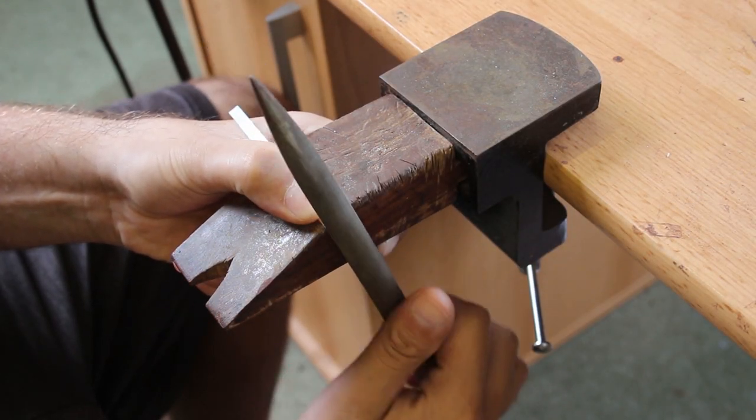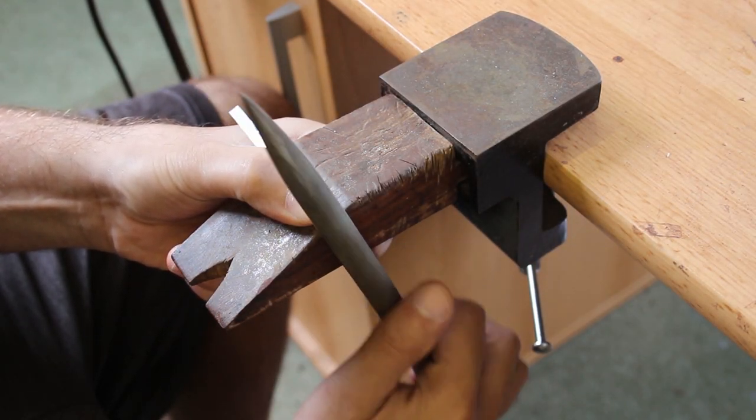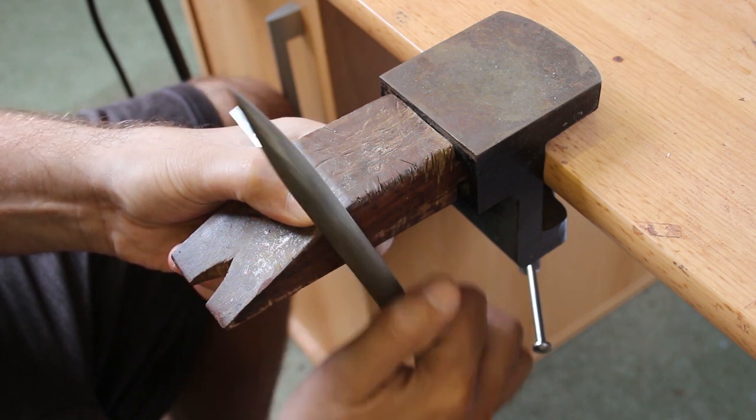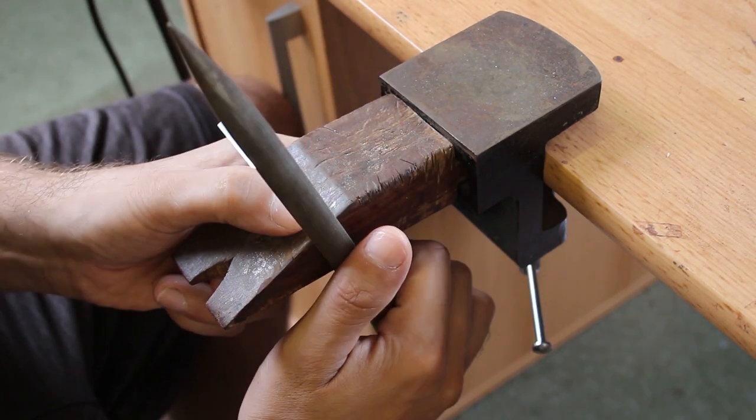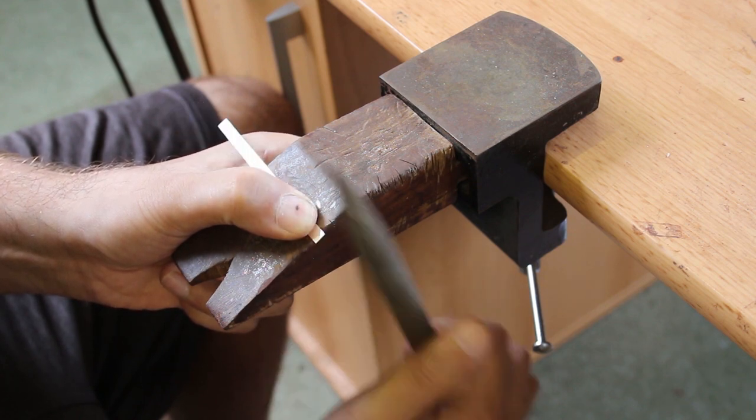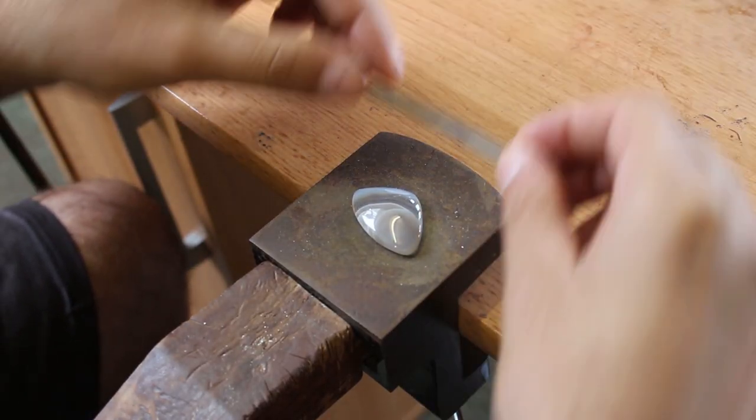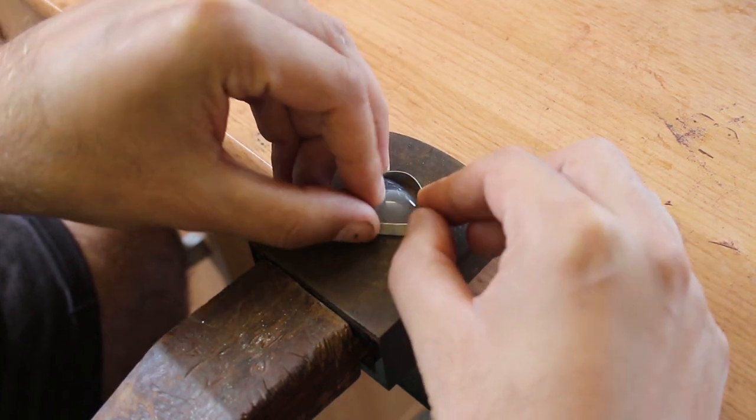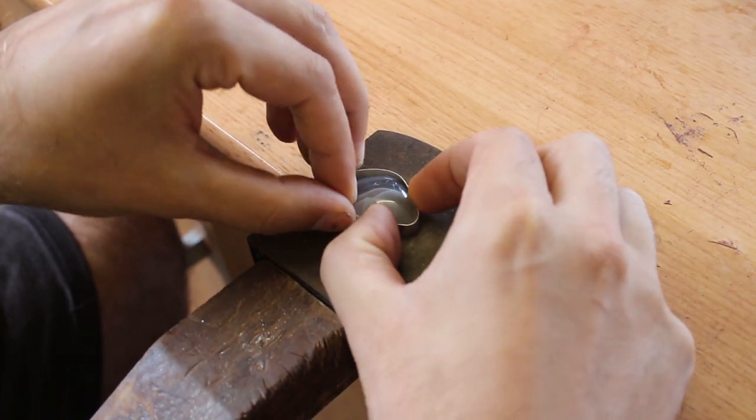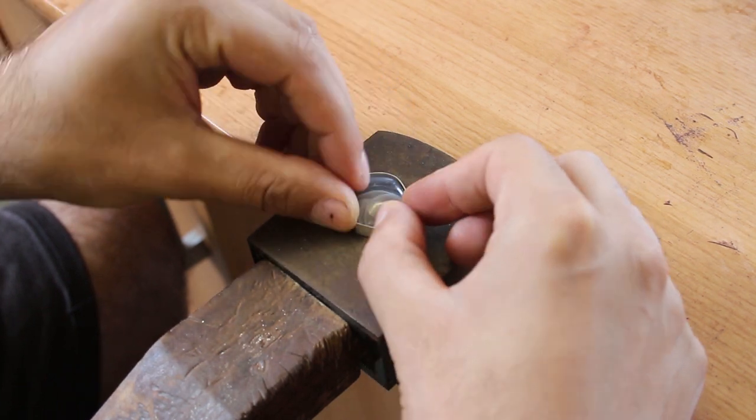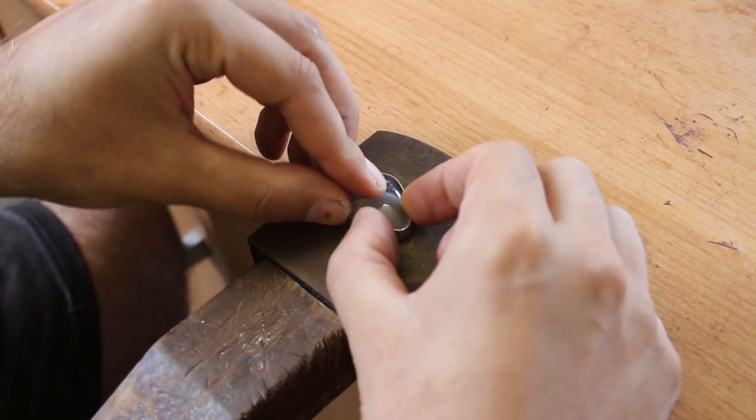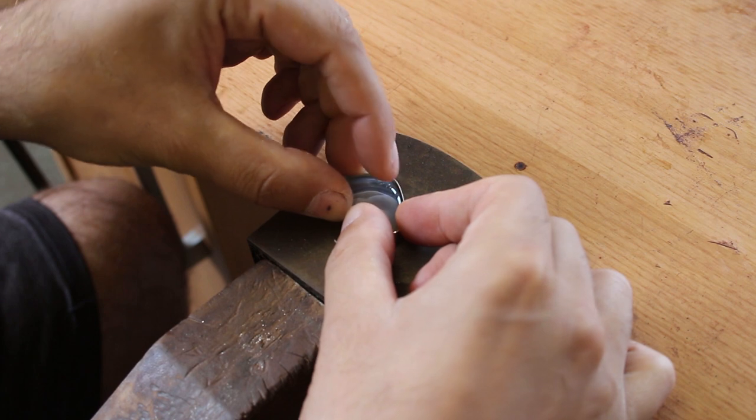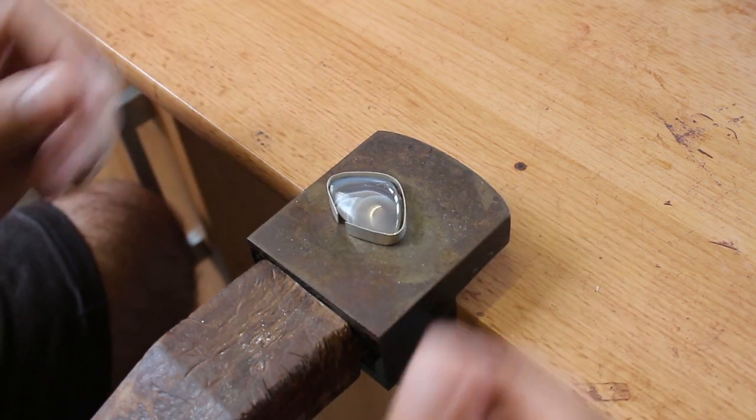Next I took a file and just filed down both of the edges that I just snipped of the bezel wire just to make sure they were nice and flat so when they were soldered together they'd have a nice pretty seam. Then I had a quick test wrap around the stone cabochon and it turned out I'd got the correct amount of bezel wire first time which was awesome.